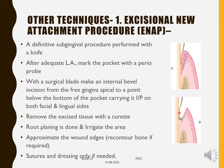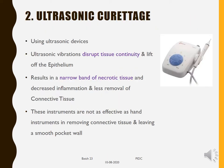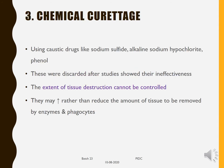The key points for ENAP are the internal bevel incision placed apical to the pocket base. Then remove the excised tissue with a curette, perform root planing to remove deposits, irrigate the area, approximate the wound, recontour bone if necessary, and suture and dress only if needed. Next is ultrasonic curettage, done using ultrasonic devices. Ultrasonic vibrations disrupt tissue continuity and lift off the epithelium, resulting in a narrow band of necrotic tissue, decreased inflammation, and less connective tissue removal. However, these instruments are not as effective as hand instruments in leaving a smooth pocket wall.